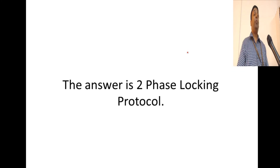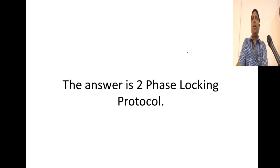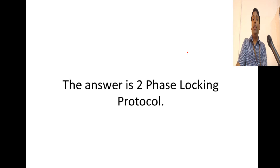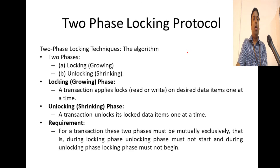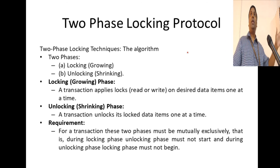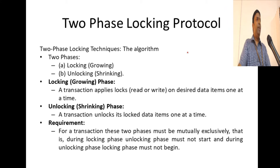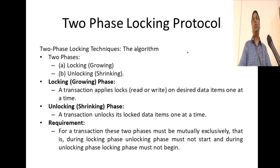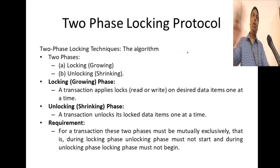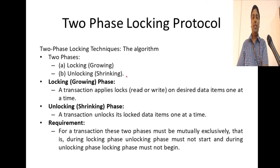The answer to this problem is the two-phase locking protocol. Though we tried locking and unlocking items, we still ended up with issues for the temporary update problem. The two-phase locking protocol has two phases: the growing phase, also called the locking phase, and the shrinking phase, also called the unlocking phase.